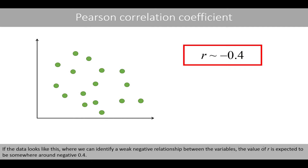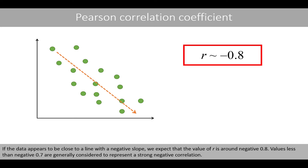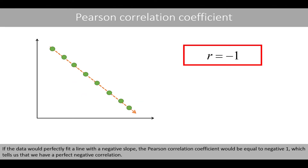If the data shows a weak negative relationship between the variables, the value of r is expected to be around negative 0.4. If the data appears close to a line with a negative slope, we expect r to be around negative 0.8, and values less than negative 0.7 are generally considered to represent a strong negative correlation. If the data perfectly fits a line with a negative slope, the Pearson correlation coefficient would equal negative 1, indicating a perfect negative correlation.